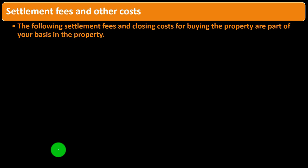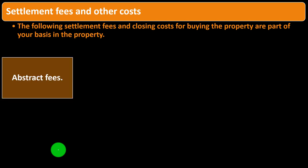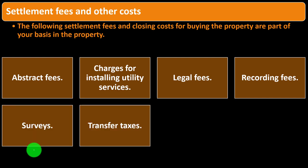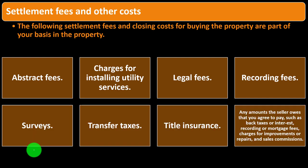Settlement fees and closing costs for buying property are part of the basis. These include: abstract fees, charges for installing utility services, legal fees, recording fees, surveys, transfer taxes, title insurance, and any amounts the seller owes that you agree to pay — such as back taxes or interest, recording or mortgage fees, charges for improvements or repairs, and sales commissions. When you go through that long closing document, most of those costs are capitalized into the property's cost basis.